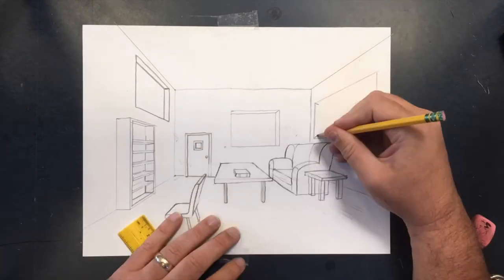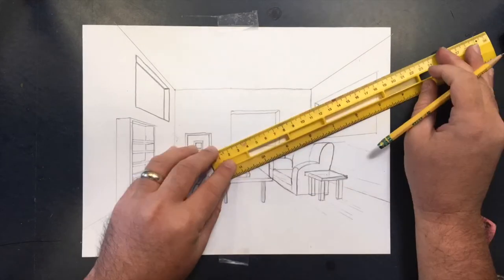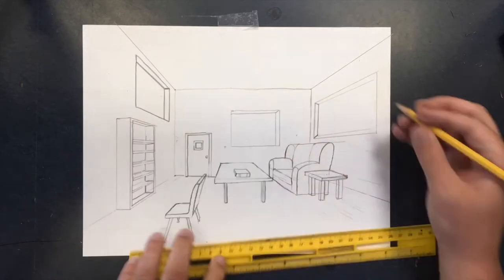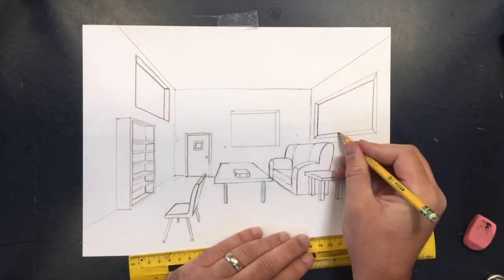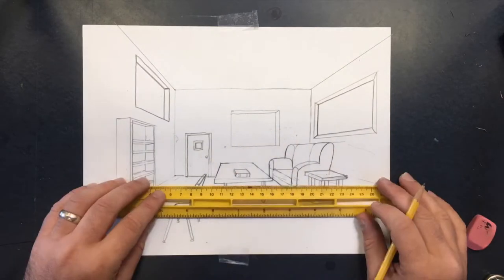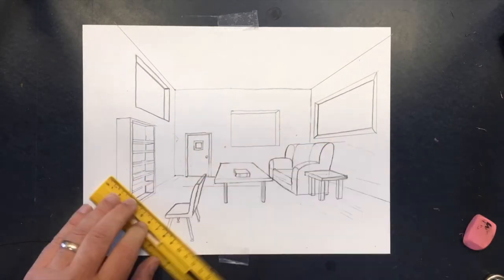When I make windows or doors, I start by drawing one vertical line, then using the vanishing point to create guidelines for the top and the bottom, and then all you have to do is decide how wide you want that window or door to be.